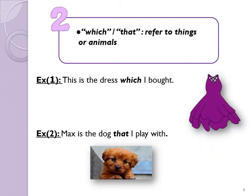Which refers to things and animals. We also use 'that' instead of 'which'. Look at example one. Instead of repeating the noun in two sentences like 'this is the dress, this is the dress I bought', we use 'which' and form the sentence as: This is the dress which I bought.